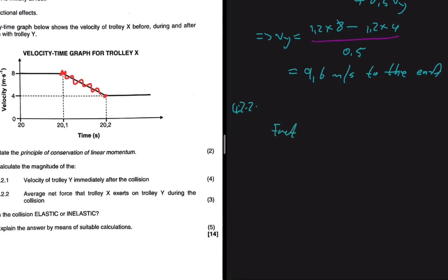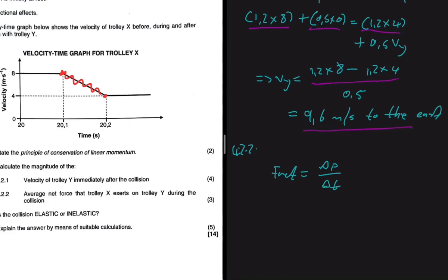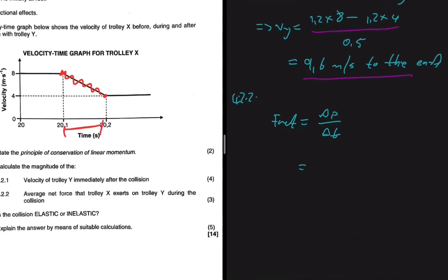We'll use F_net = Δp / Δt applied to trolley X. The reason for using trolley X rather than trolley Y is that the velocity of trolley Y was calculated by us, so if that value is wrong, using it again compounds the error. With trolley X, we use velocities directly given to us: momentum final is 1.2 × 4 minus momentum initial of 1.2 × 8.